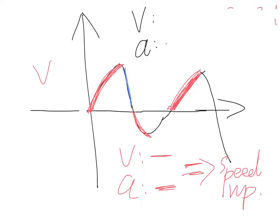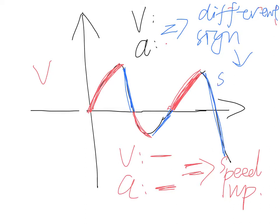Here in this region, and here in this region, and here in this region, because the velocity and the acceleration don't have the same sign, different signs, which means the object is slowing down.